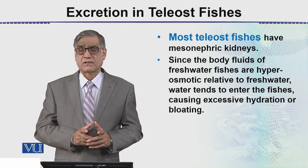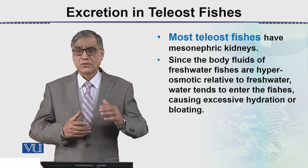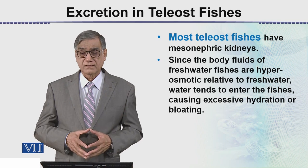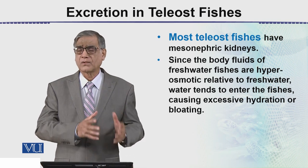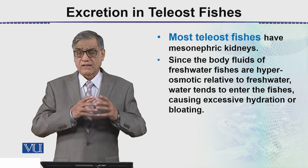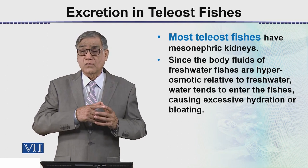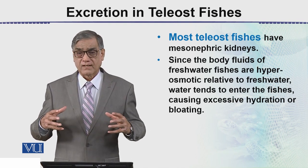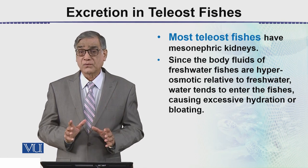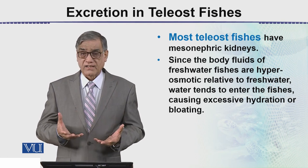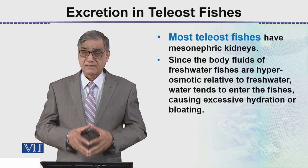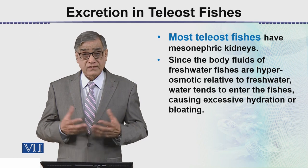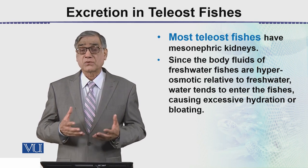Fresh water fish have body fluids where the solute concentration is very low relative to the external environment — about 90 to 95 percent. What happens is that water will start moving into the body by osmosis, which would cause excessive hydration. But this is controlled because of osmoregulatory mechanisms, and these fish have the mesonephric kidney.